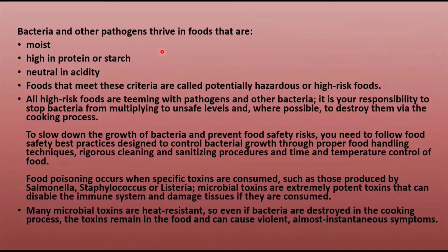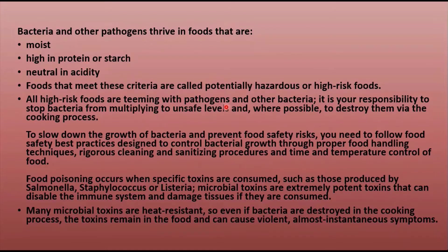Bacteria and other pathogens thrive in foods that have moist conditions, are high in protein or starch, and are neutral in acidity. If bacteria find these atmospheric conditions, they will grow more in number. Foods that meet these criteria are potentially hazardous or high-risk foods. All high-risk foods are teeming with pathogens and other bacteria.